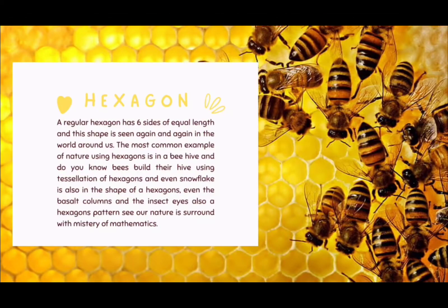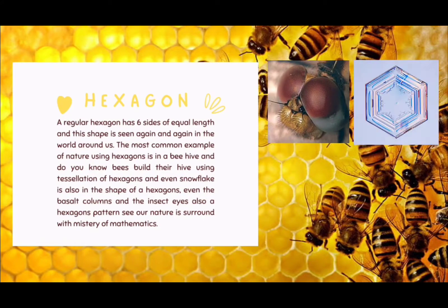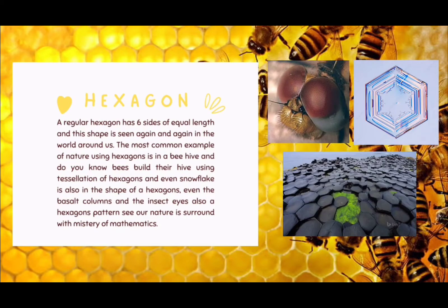A regular hexagon has six sides of equal length, and this shape is seen again and again in the world around us. The most common example of nature using hexagons is a beehive — bees build their hives using a tessellation of hexagons. Even snowflakes take the shape of a hexagon, as do basalt columns and insect eyes.